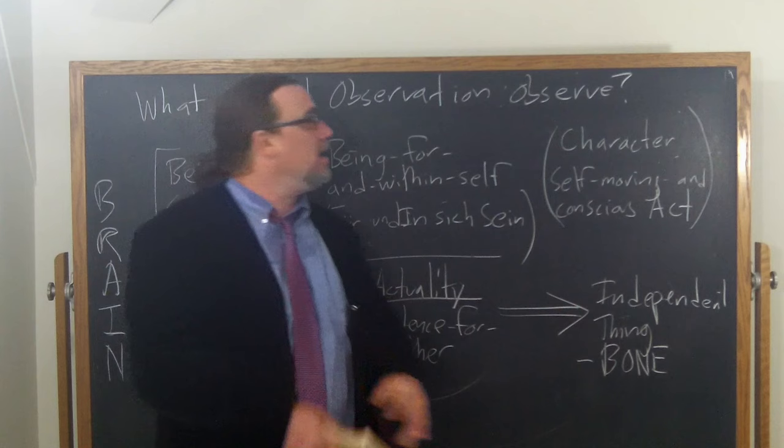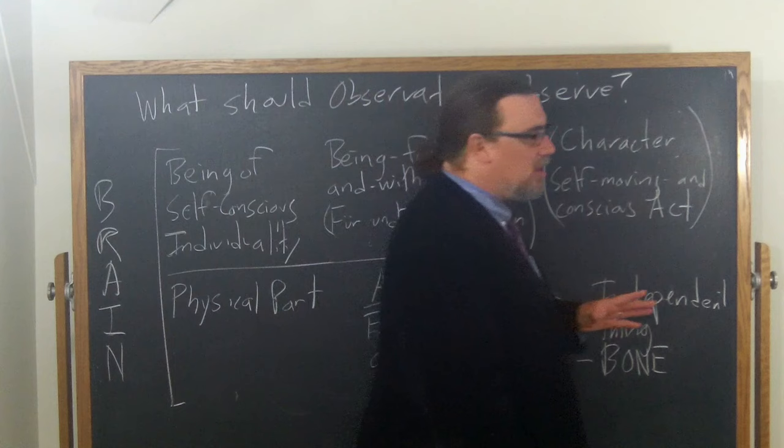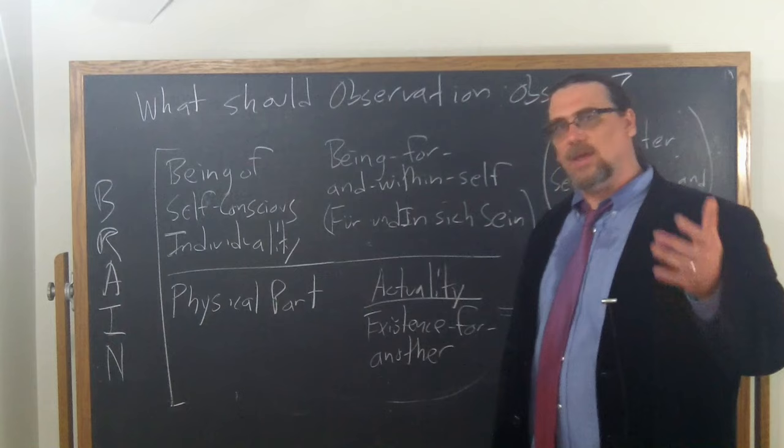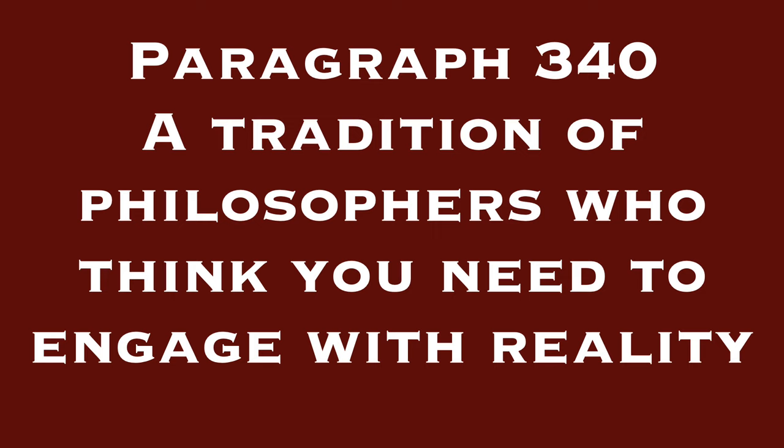So he says, this is how the relationship and the two sides of this relation are understood by the consciousness observing them. This is how observation, observing consciousness, goes in the wrong direction in the pseudoscience of phrenology.